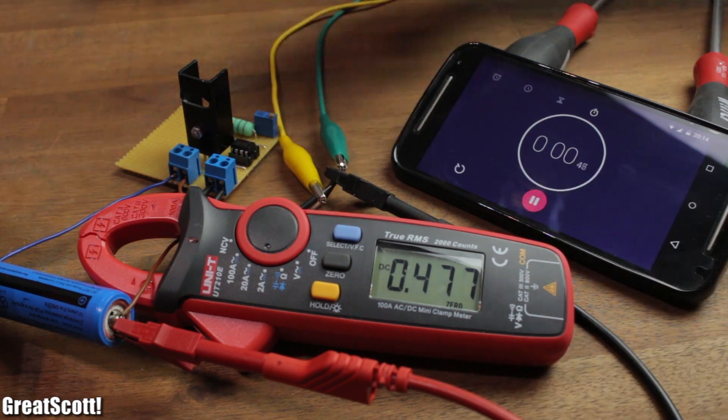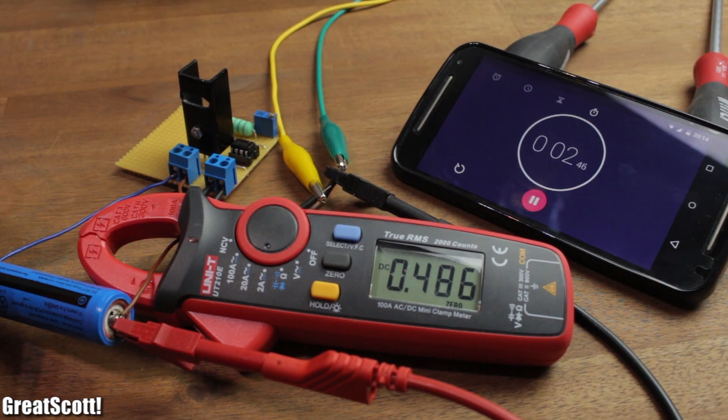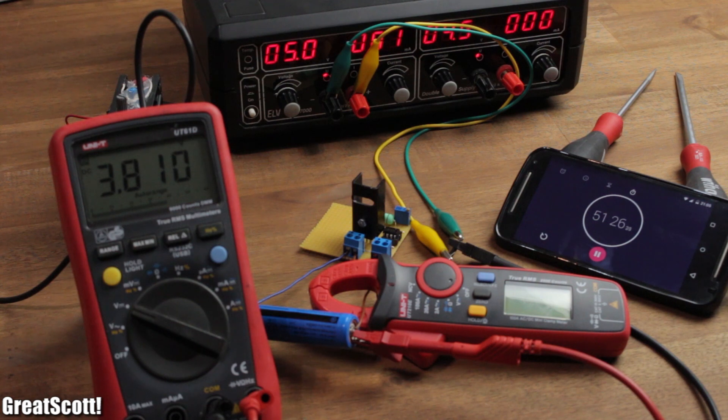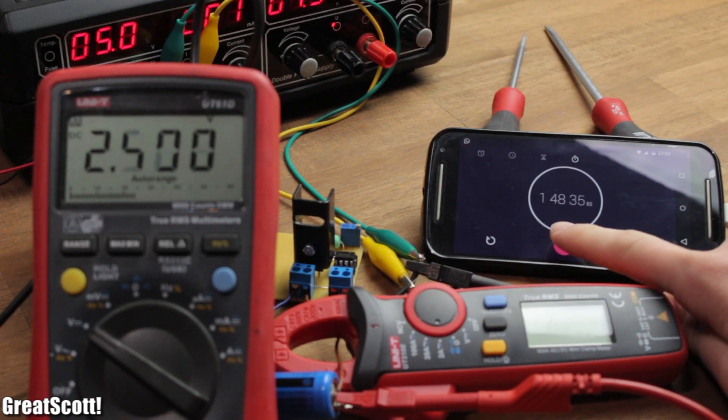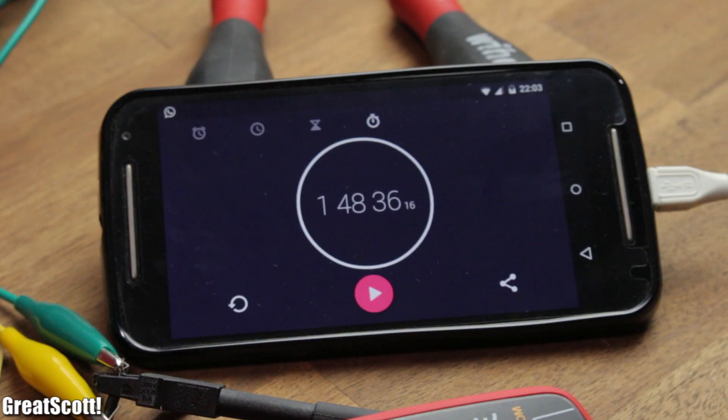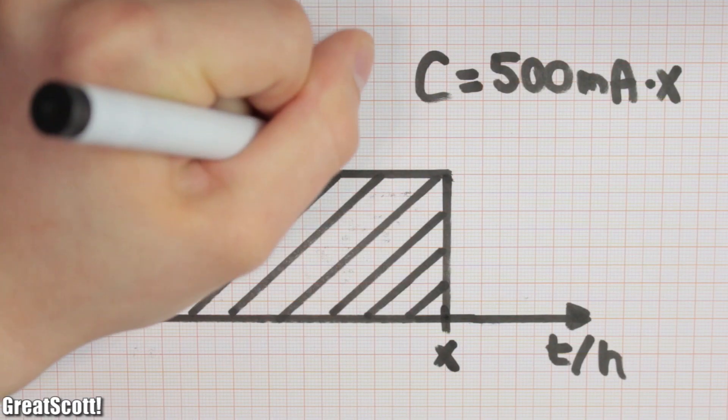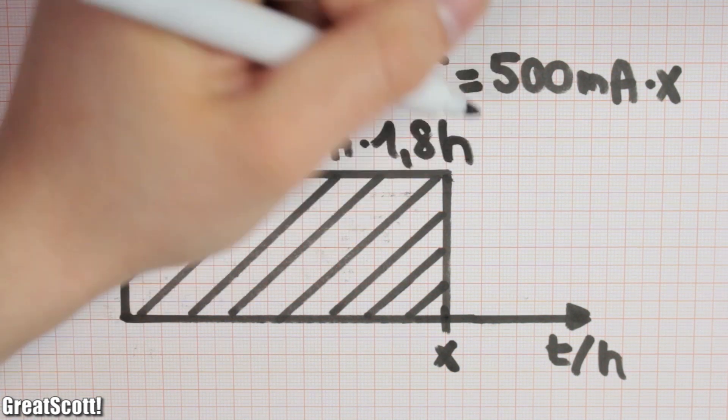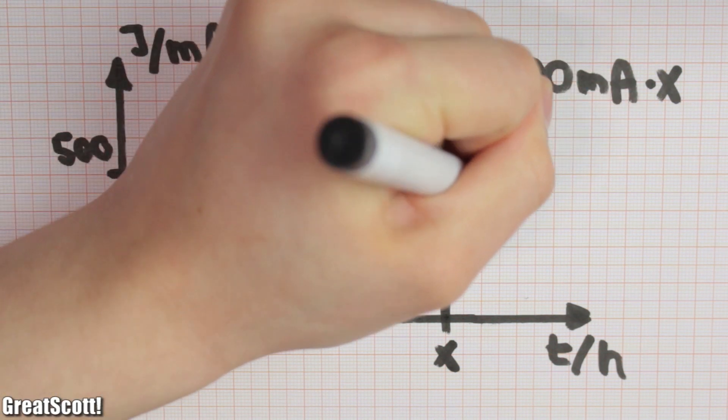Don't worry that the current clamp only shows 480-something milliamps, it is not that precise. The whole discharge process took quite a while, but after 1 hour and 48 minutes, the voltage finally reached 2.5 volts. If we multiply the 500 milliamp constant load with 1.8 hours, we get a capacity of... drumroll please... 900 milliamp hours.